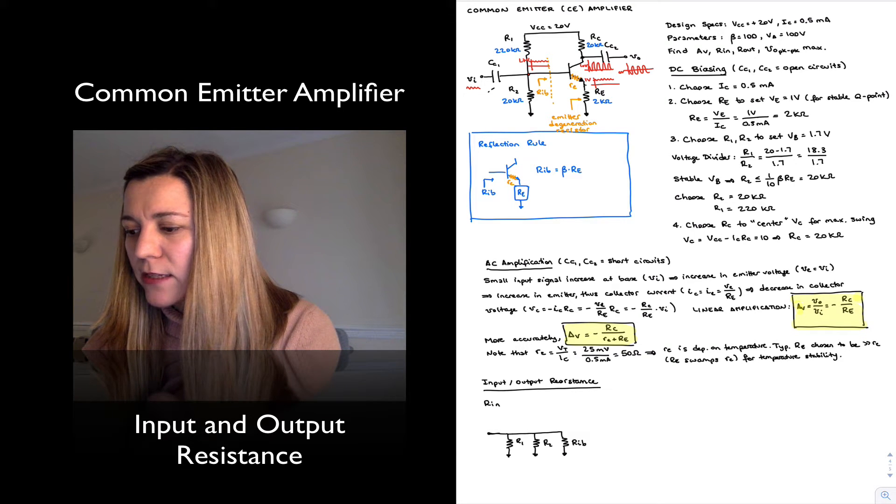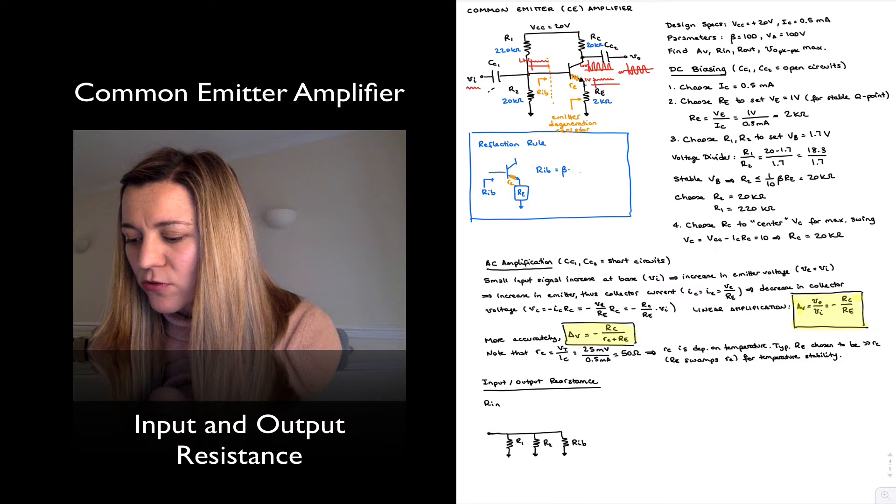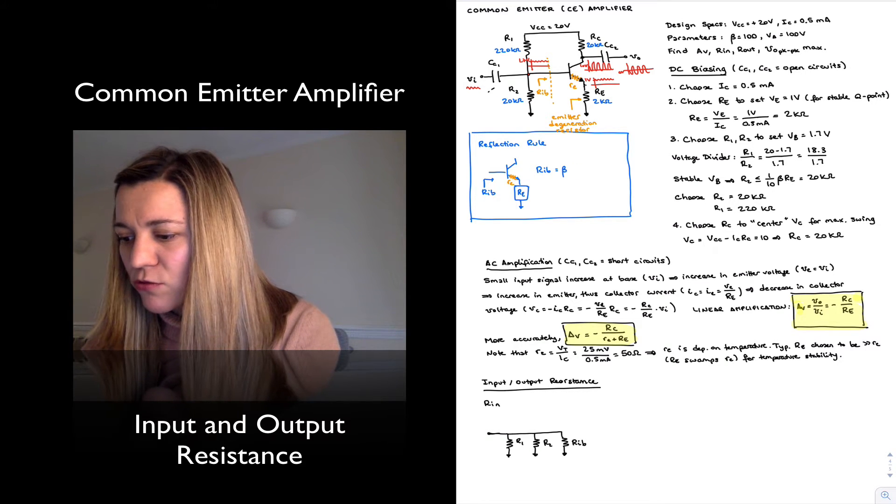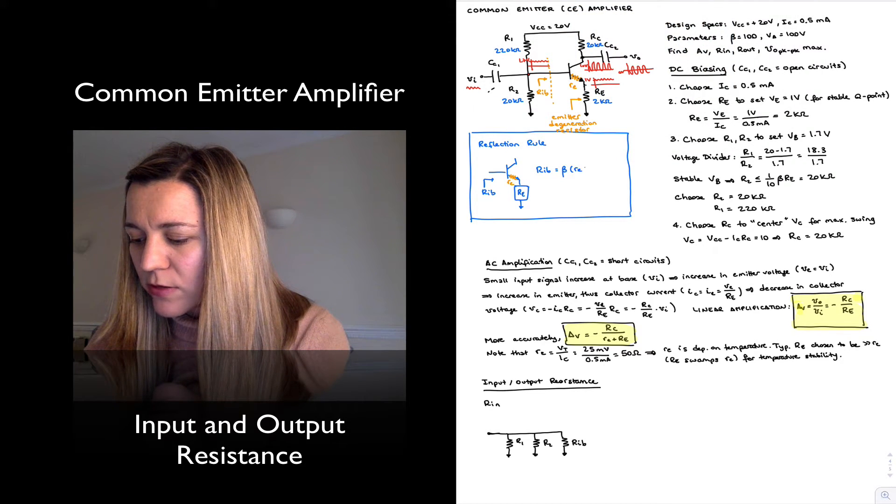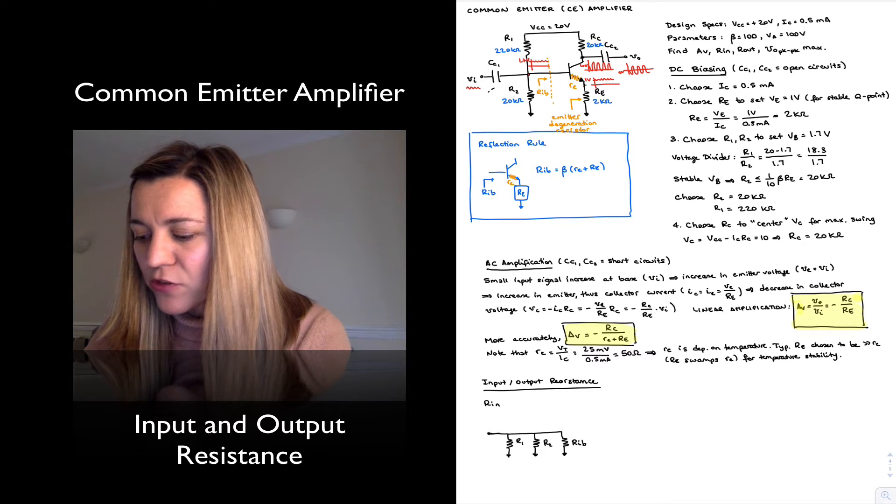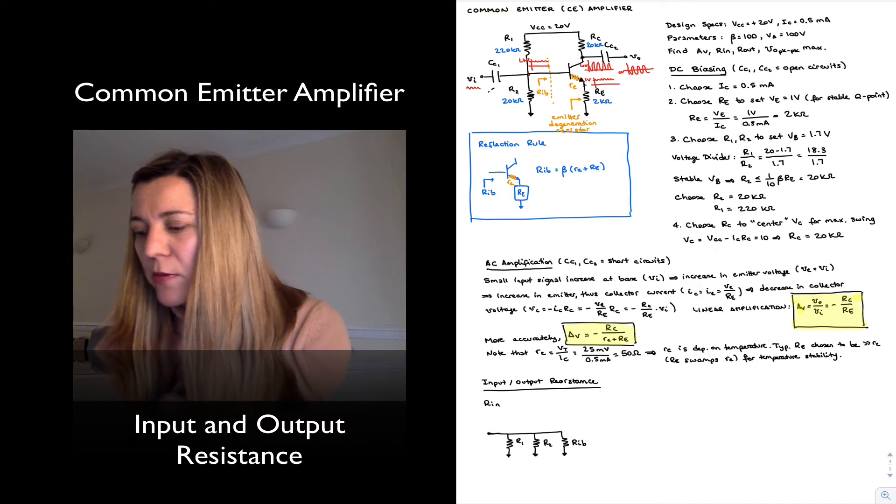Now, we have defined Rib as being beta times Re, but notice that we ignored little re, and so we can sort of add that into our reflection rule scenario up here. So this will be beta times little re plus Re, or the series combination of the two—so it's beta times the overall resistance connected to the emitter.